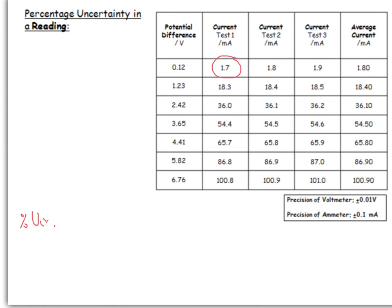So our percentage uncertainty, let's get this right to start with. It's going to be the precision, so 0.1, divided by the actual reading, 1.7 times 100, and that's going to give you a percentage uncertainty of 5.8. When you round it, that will become 5.9%, which is quite a high percentage uncertainty.